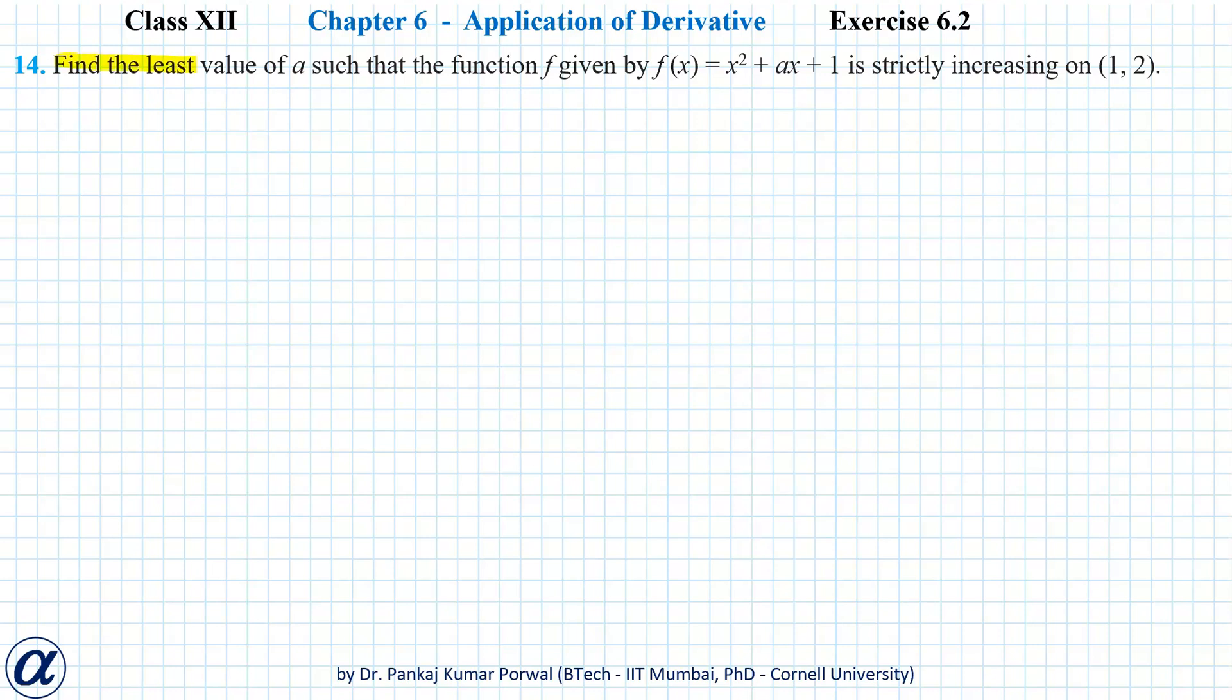In this question we want to find the least value of a such that the function f given by f(x) = x² + ax + 1 is strictly increasing on the open interval (1, 2).